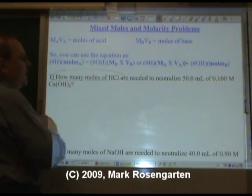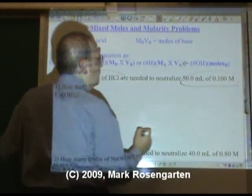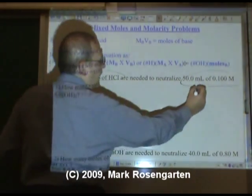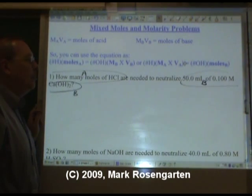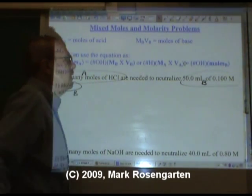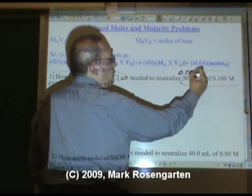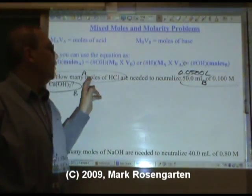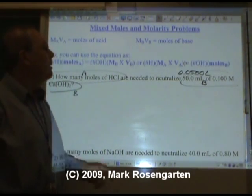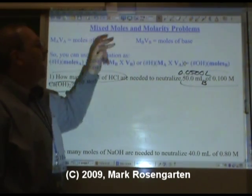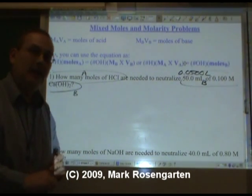So this says how many moles of HCl are needed to neutralize 50.0 milliliters of 0.100 molar Ca(OH)2. So this is the stuff about the acid. This is the stuff about the base. Now because we're solving for moles, we're not going to be able to cancel out the milliliters. So we need to convert the milliliters to liters before we solve the problem. 50.0 milliliters is 0.0500 liters. Because I don't have milliliters on this side and moles is molarity times liters, I have to convert my milliliters to liters first before I can solve the problem.